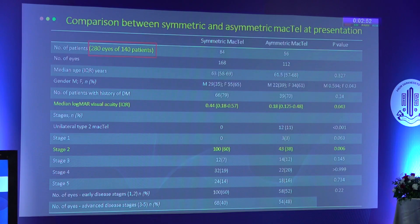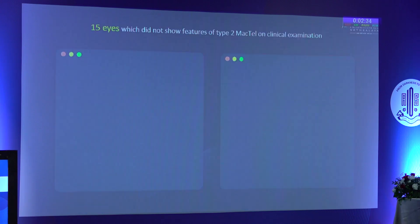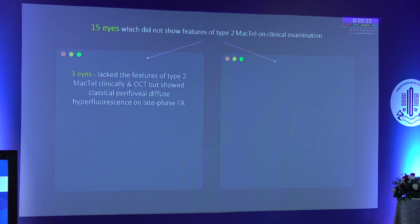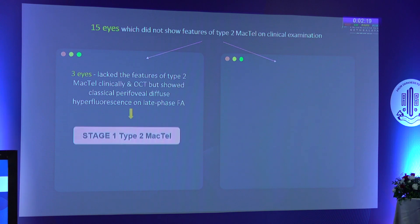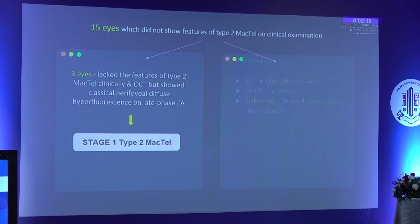Our results: we studied 280 eyes of 140 patients, wherein 84 had symmetrical MacTel whereas 56 had asymmetrical MacTel presentation. The majority of cases fell into stage 2. There were 15 eyes which did not show features of MacTel on clinical examination. Three eyes lacked features of type 2 MacTel clinically and on OCT, but showed classical perifoveal characteristics on angiography — these were labeled as stage 1 type 2 MacTel.